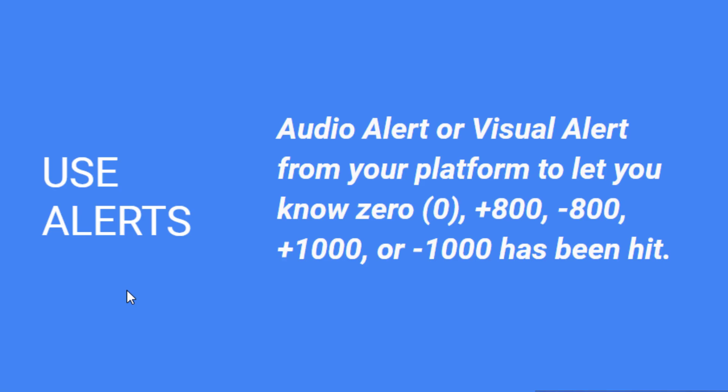Before we look at charts, let's talk about the best way to utilize these. I think you should use alerts — audio or visual alerts. The levels you want are zero, plus 800, minus 800, plus 1000, and minus 1000, and make them repeatable. If you're not familiar with the tick, it swings back and forth through these levels multiple times during the day, so you need those alerts firing consistently.